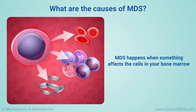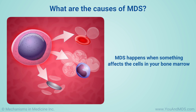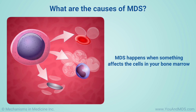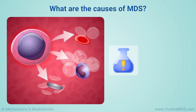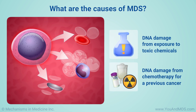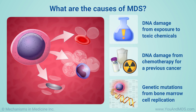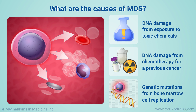MDS happens when something affects the cells in your bone marrow, where blood cells are made, that prevents them from continuing to make healthy cells. In some cases, the cause is DNA damage from exposure to toxic chemicals or chemotherapy for a previous cancer. In other cases, the cause is a genetic mutation that arises as the bone marrow cells replicate over and over. This is associated with older age.